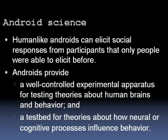Human-like androids can elicit social responses from participants that only people were able to elicit before. So androids can provide a well-controlled experimental apparatus for testing theories about human brains and behavior, and a testbed for theories about how neural and cognitive processes influence behavior.